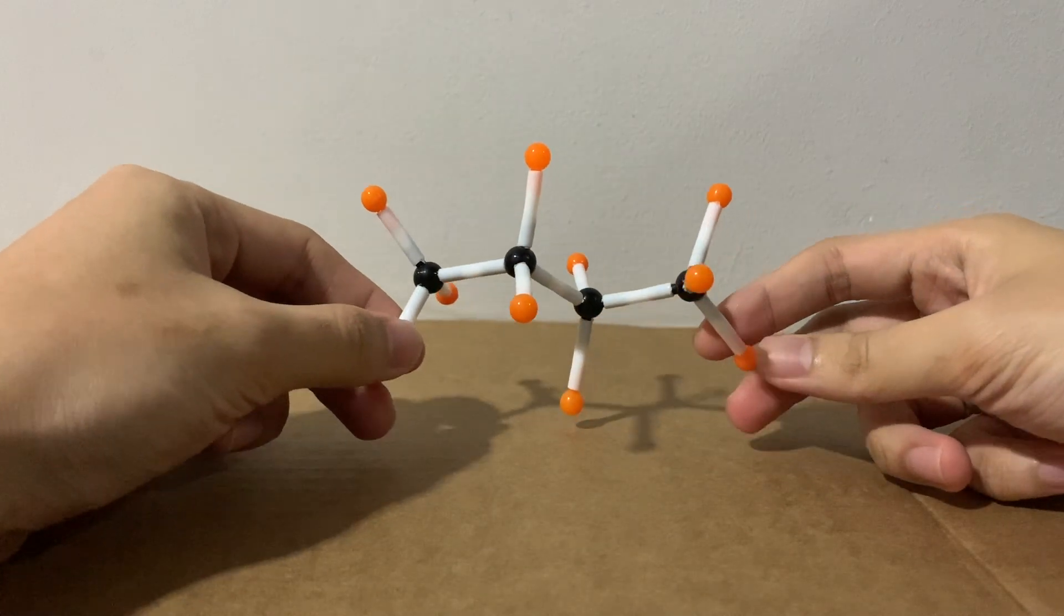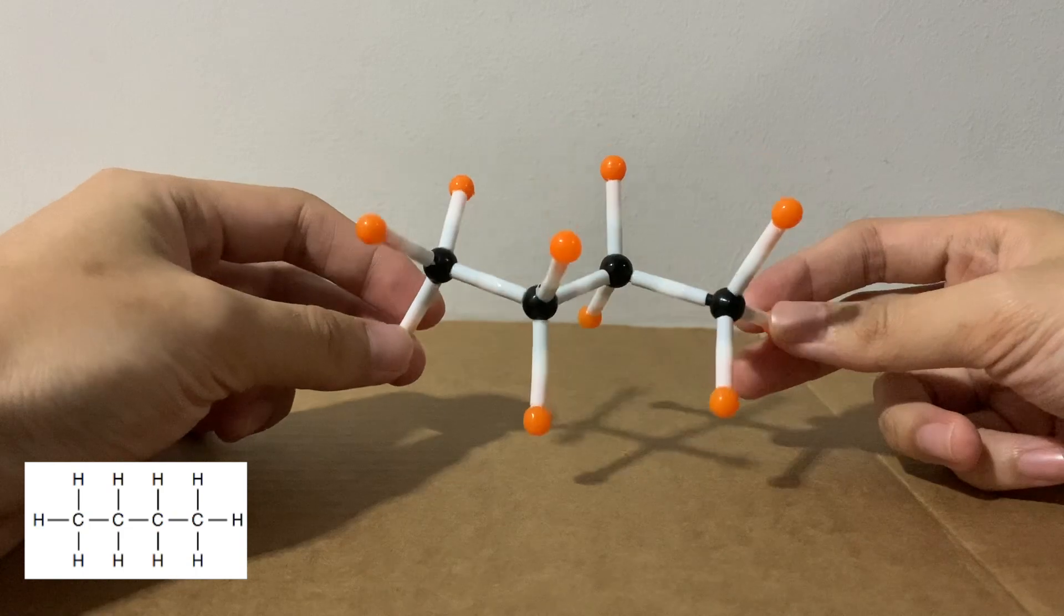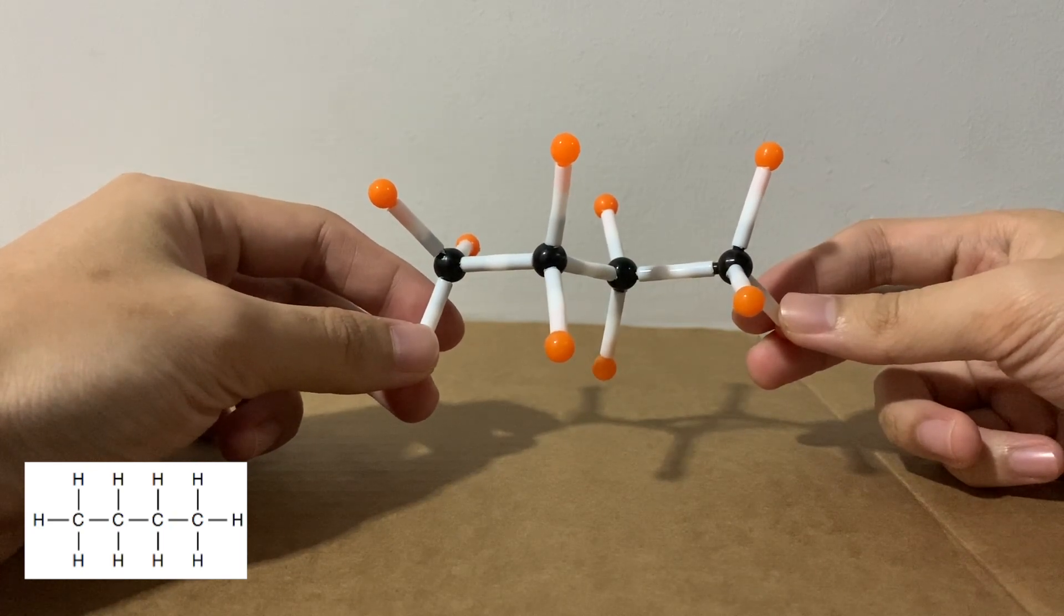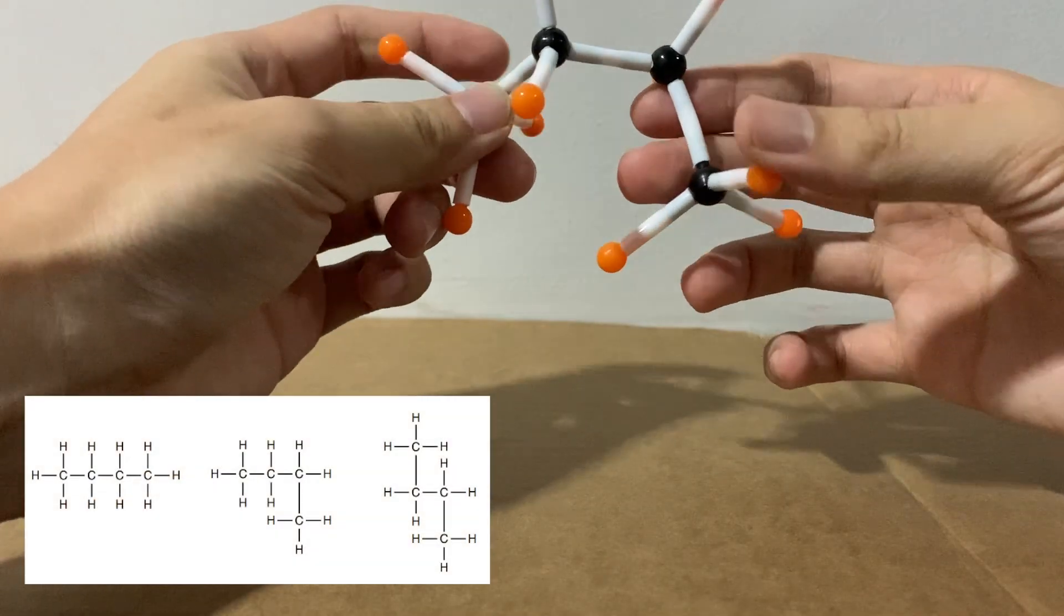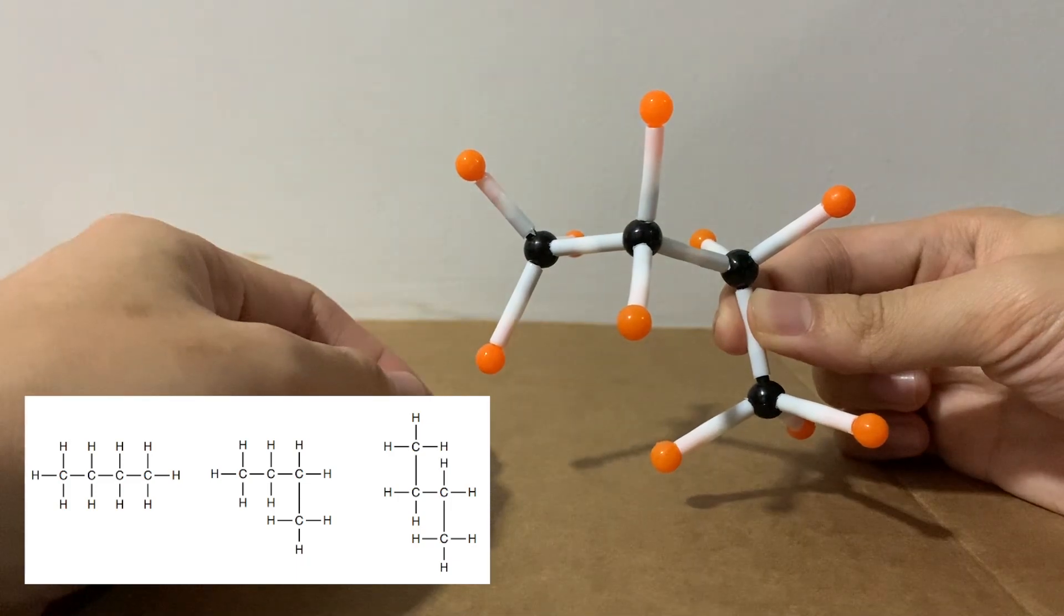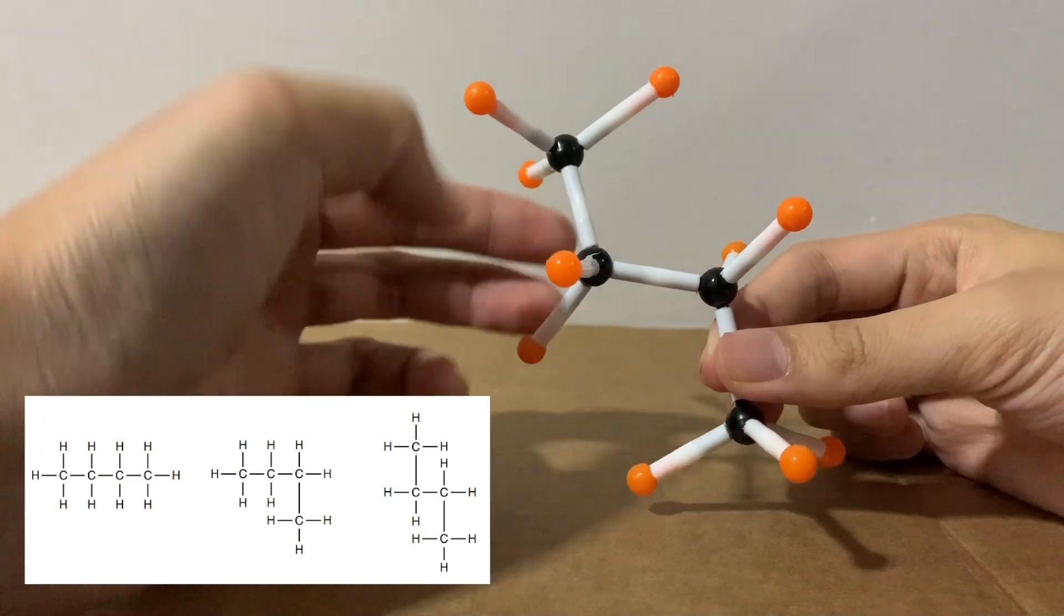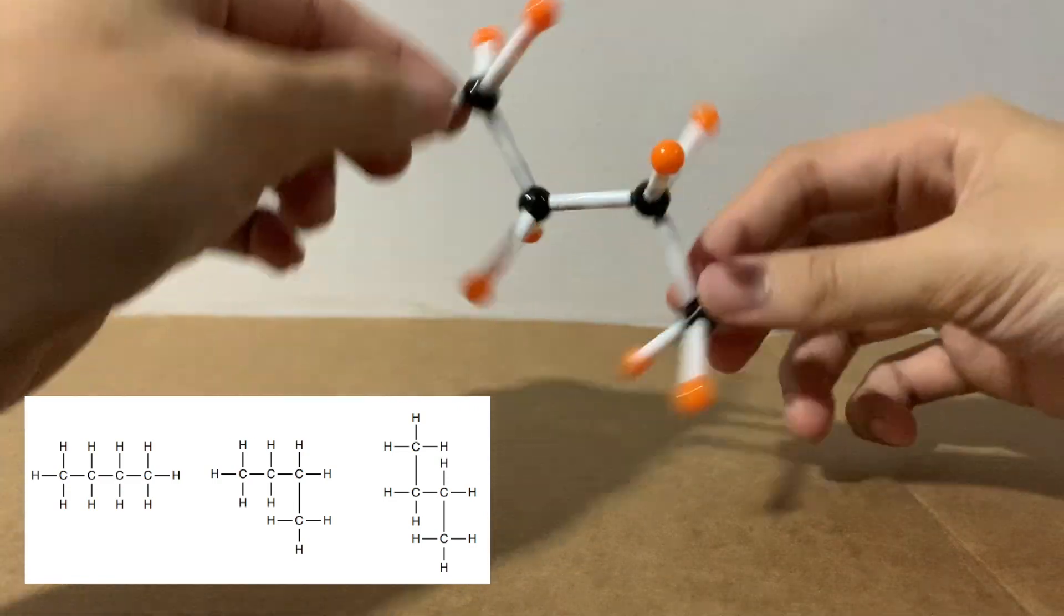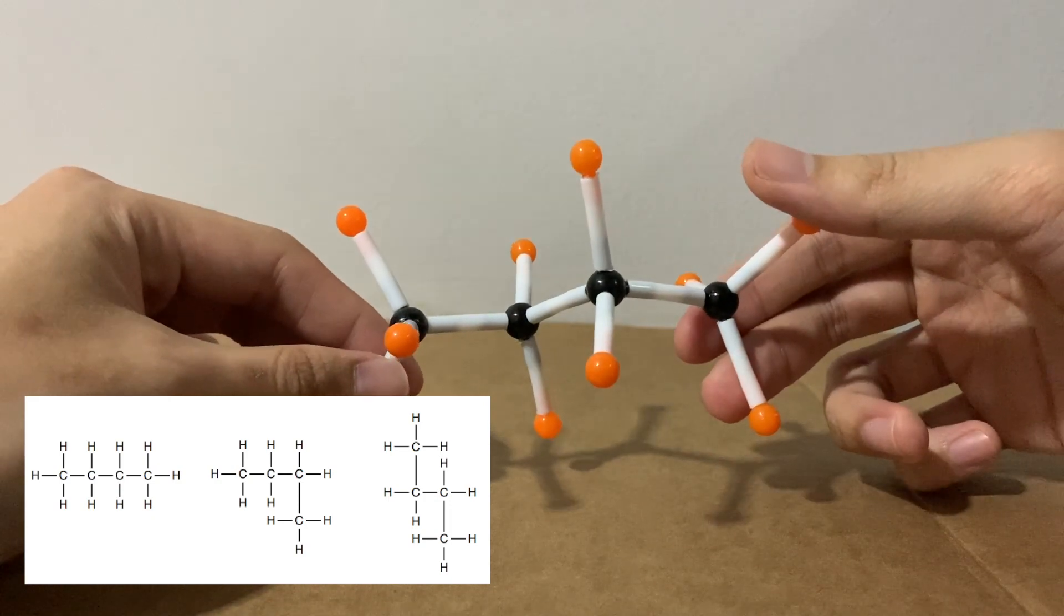Over here, I have a molecular model that shows butane. There are four carbons represented by the black spheres and 10 hydrogens represented by the orange spheres. It might look very different from what is drawn on paper because molecules are three-dimensional in nature. So naturally, the bonds will spread out as far as possible to minimize repulsion. I'm just going to rotate this down, and you can see it resembles the second diagram. I can also rotate this up and it gives sort of like an S shape. All these structures by just rotating the bonds, they are the same molecule because molecules are constantly moving. So this molecule here, if I were to look at it from this way, looks like the first one, right? So just by merely rotating bonds, we can't create isomers.